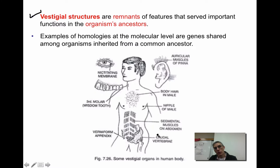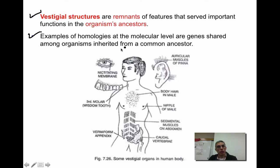The whole idea of vestigial structures raises the question: why do they stick around if we're not using them? The answer is that they really don't cause us any harm, and unless they're detrimental to the population they are going to stick around. Another good example of homologies — evidence at the molecular level — would be genes shared among organisms inherited from a common ancestor. Looking at DNA and comparing the genome, if you can see similarities between different organisms, that's a really good indicator that those organisms were related at some point in time.